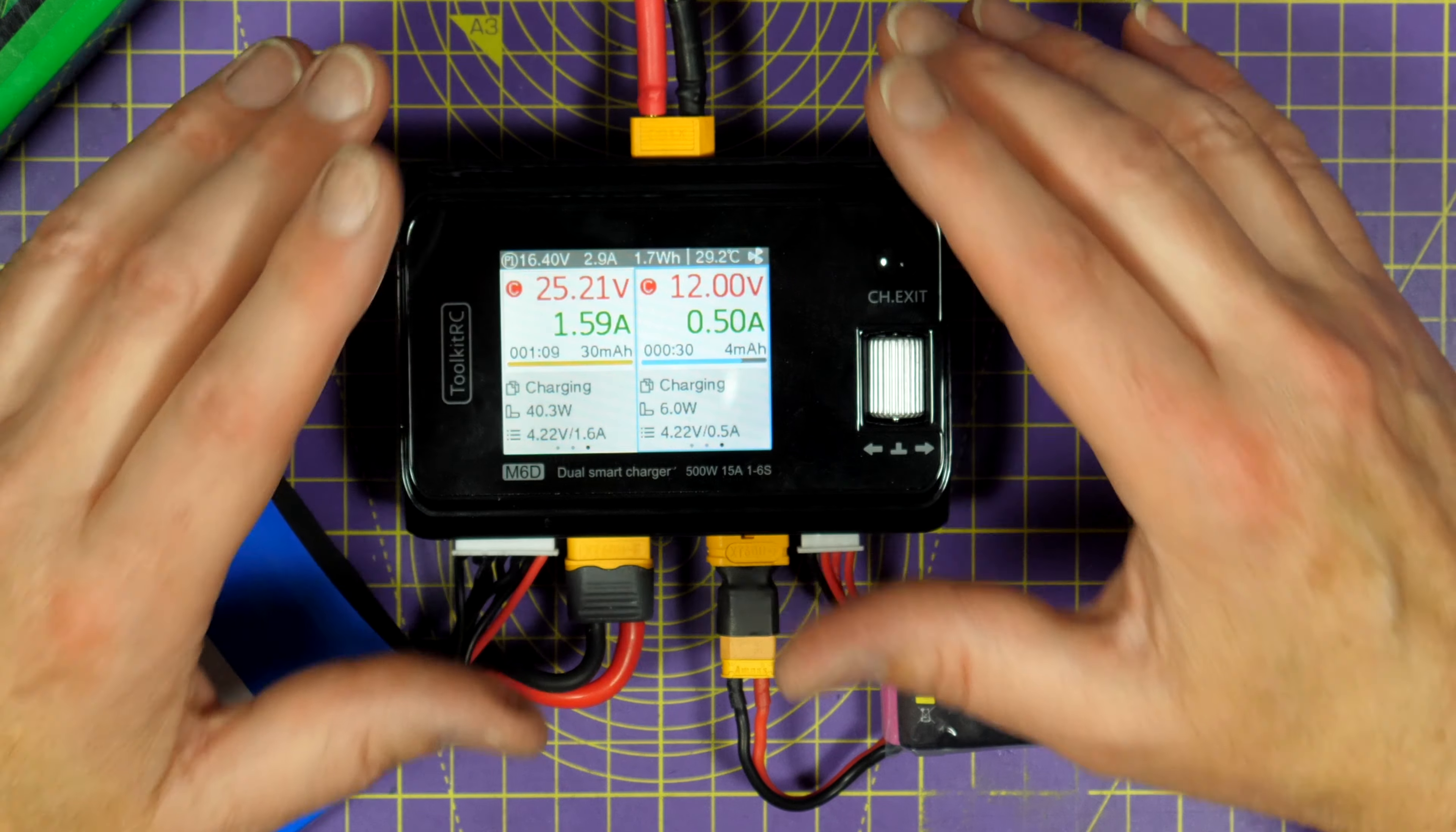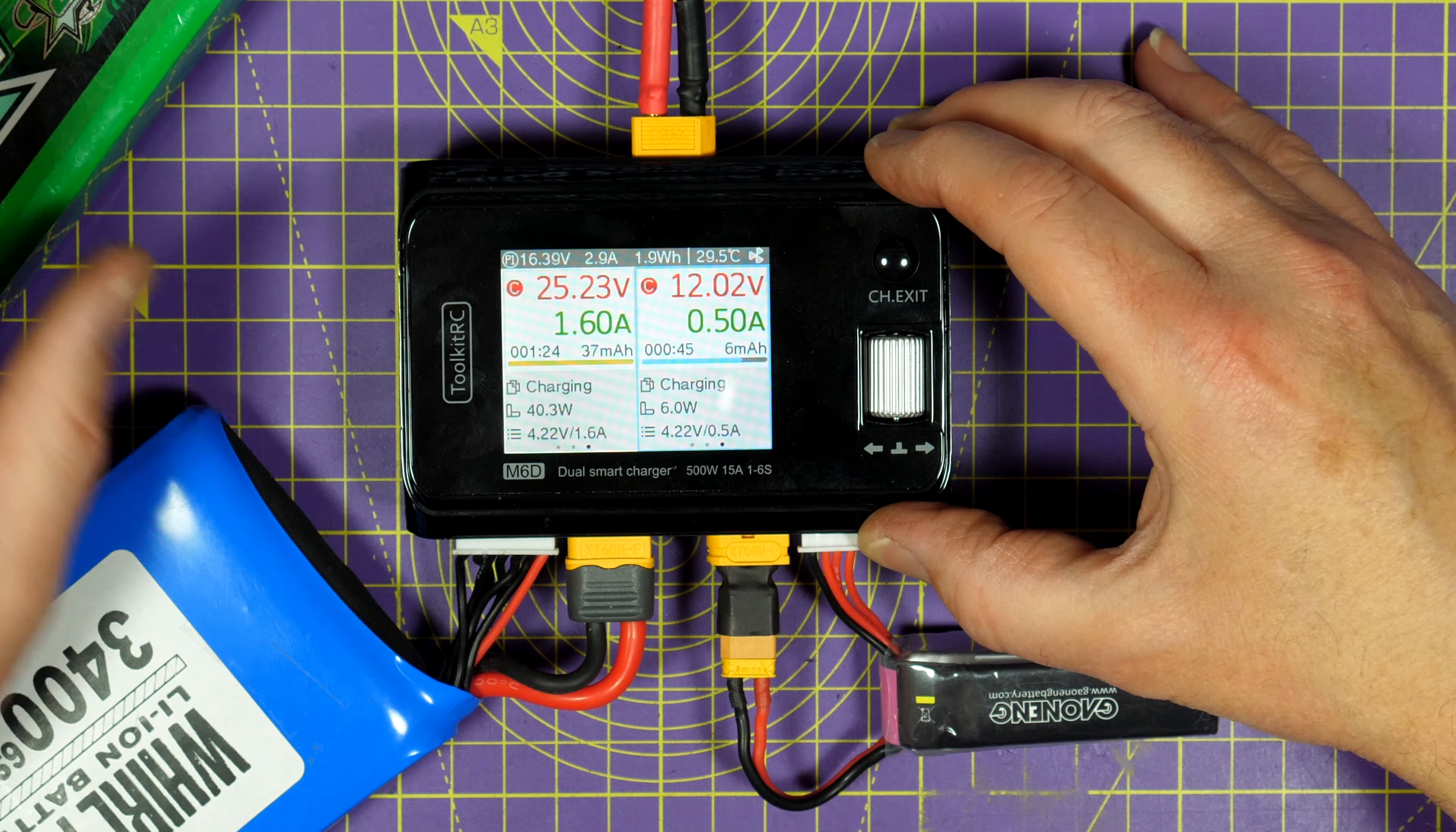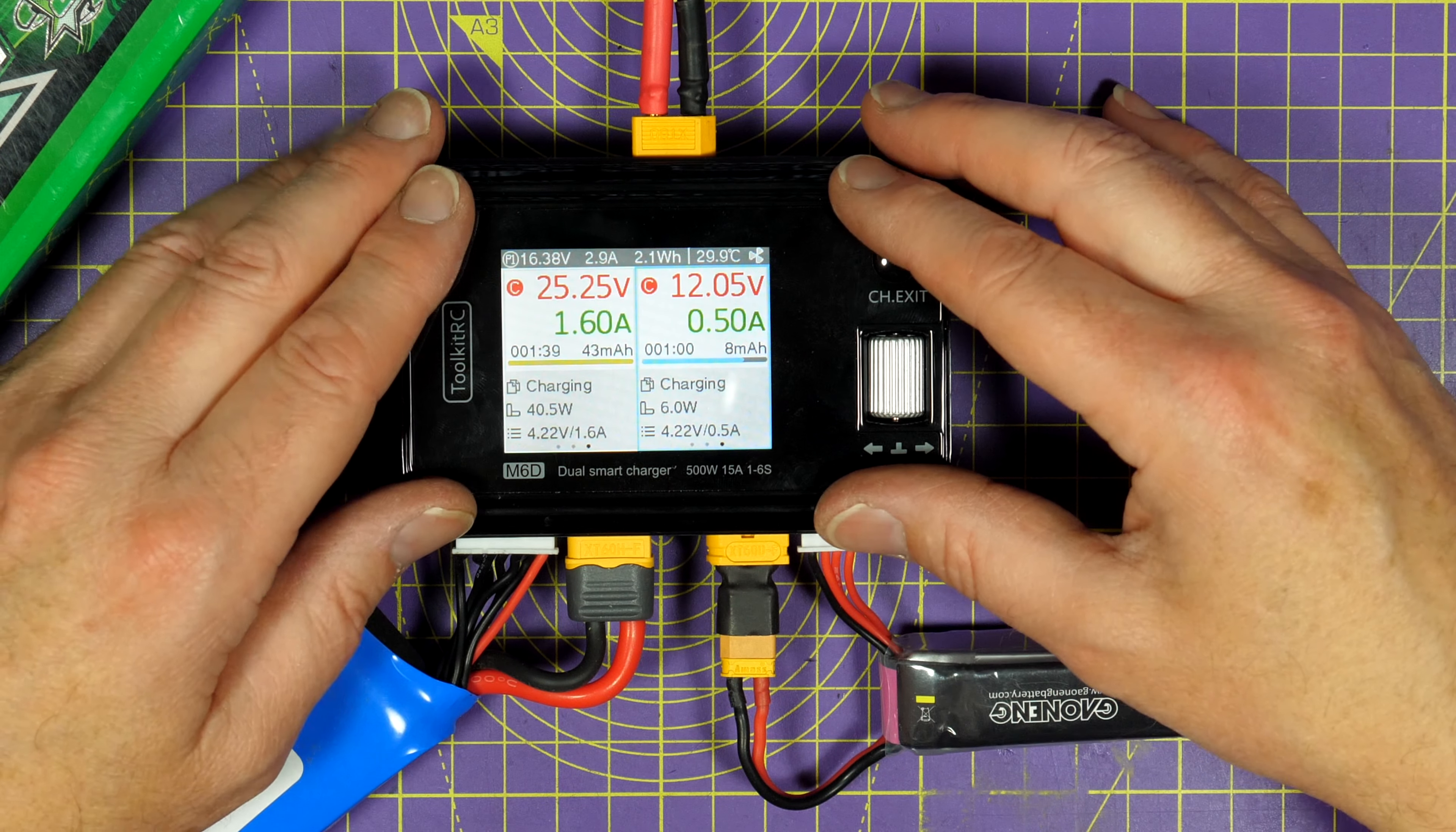Now a quick word about the power distribution. This box can't perform magic and can only charge up to the maximum of the charging source power, in this case a 4S 10Ah battery. So, even if I set this to charge two batteries at 15 amps each, there simply isn't enough input power to do what you've set it to do. But it will dynamically balance the distribution of power between both the channels as best it can.